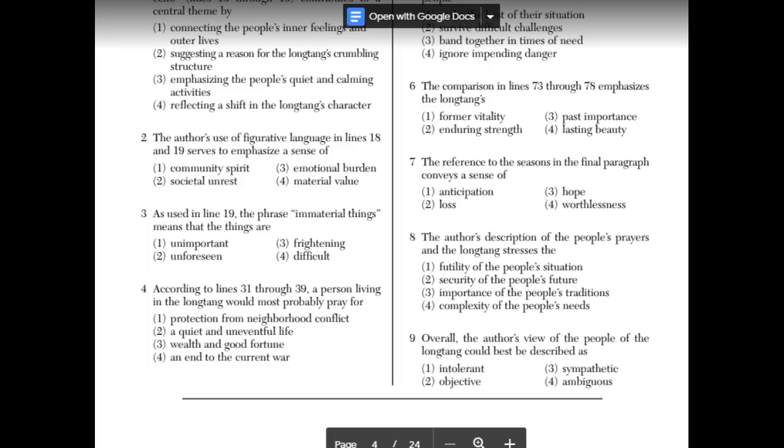And then, nine, overall, the author's view of the people of the Long Tang could best be described as. So, intolerant means he doesn't tolerate them. He's like judging them. He's not accepting of them. No, he's not judging them. Is it objective? Like, he doesn't feel a certain way about them. He's just giving you information. No, I feel like he feels bad for them.